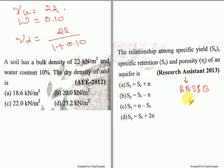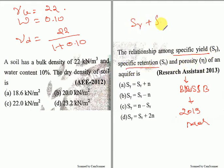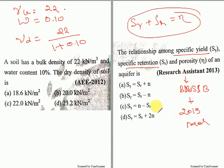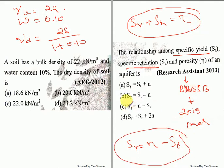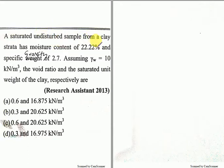The relationship between specific yield and specific retention and porosity: specific yield plus specific retention is equal to porosity. This is a very important equation that you need to remember. Specific yield is equal to porosity minus specific retention. This equation can be converted like this, and option C will be the right answer.